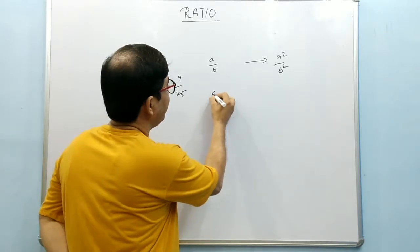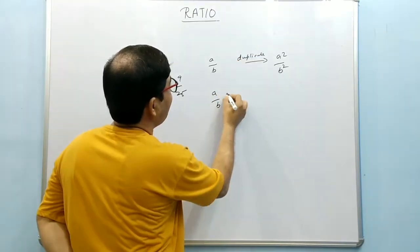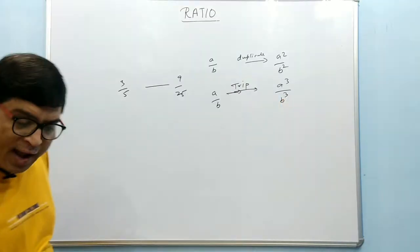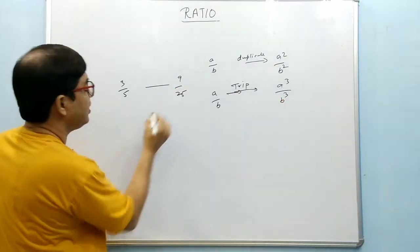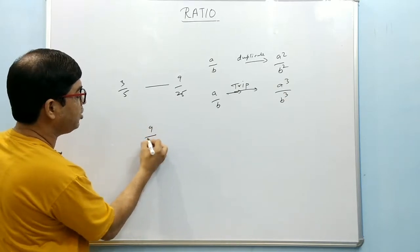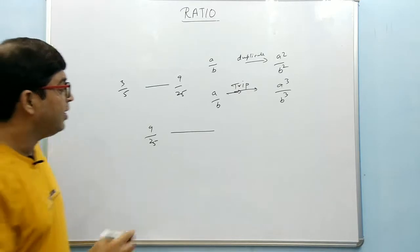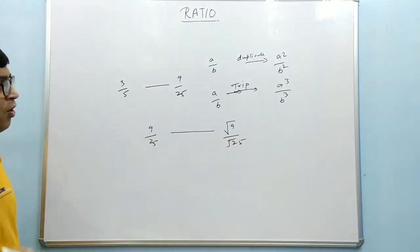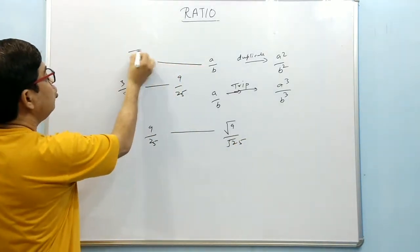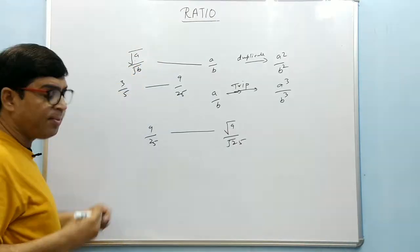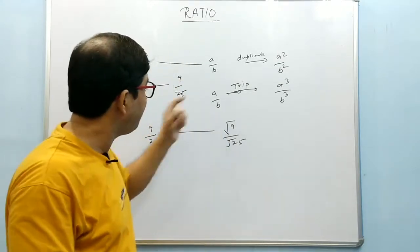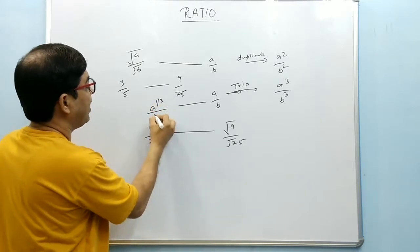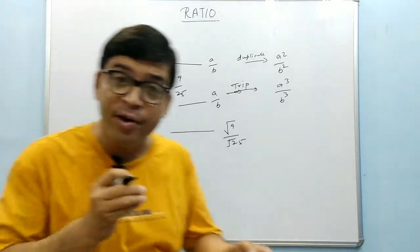The triplicate ratio of a by b is a cube by b cube. The subduplicate ratio means the square root: subduplicate of a by b is root a by root b. For example, subduplicate of 9 by 25 is root 9 by root 25. The subtriplicate ratio is a to the power 1 by 3 over b to the power 1 by 3, that is the cube root.